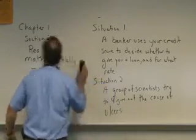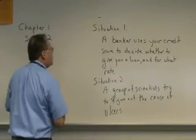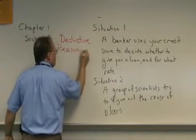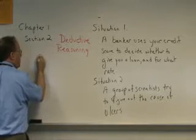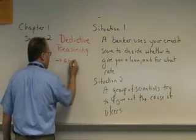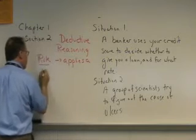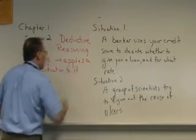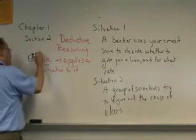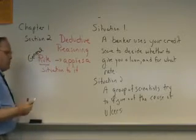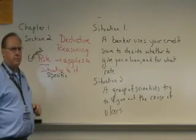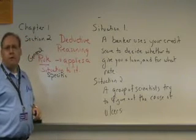This first method is called deductive reasoning. Deductive reasoning essentially starts with a rule — a general rule — and then applies a specific situation to it. From that general rule, you're able to accommodate all kinds of specific examples. We use this in mathematics all the time, in fact far too often.